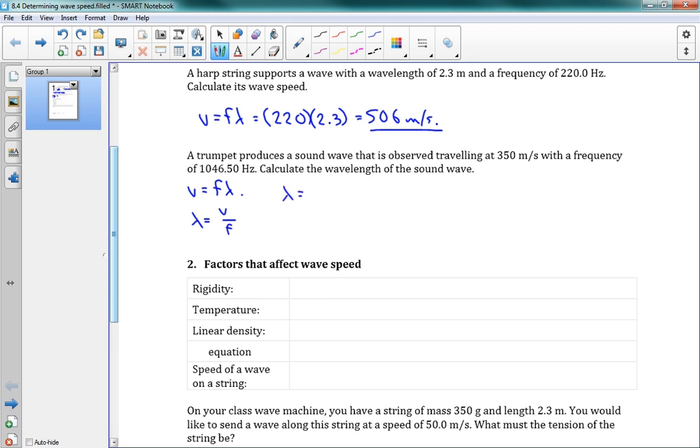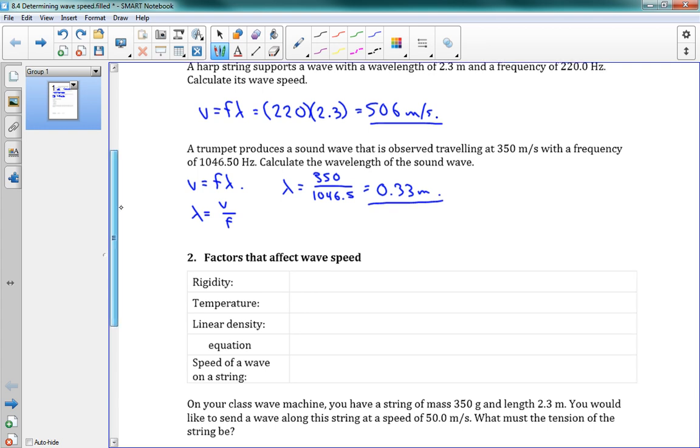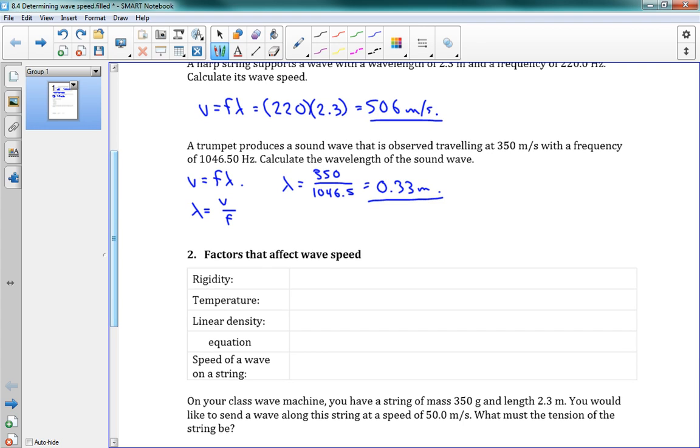Lambda, we've got our v, 350, divided by our f, 1046.5. And this gives us 0.33 meters. That's our wavelength. That's how long, physically, that wave is, how much distance it takes to repeat. Good. That's how we use that equation.